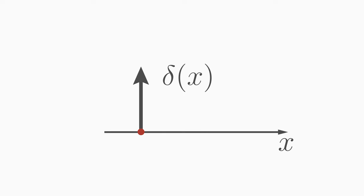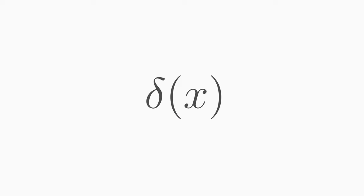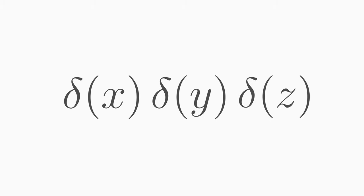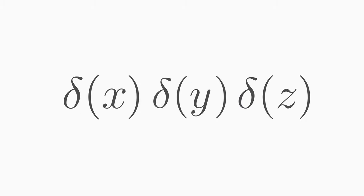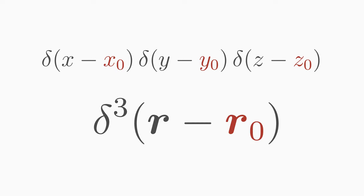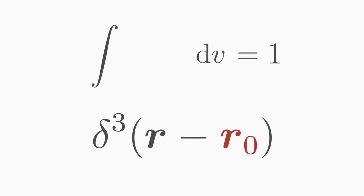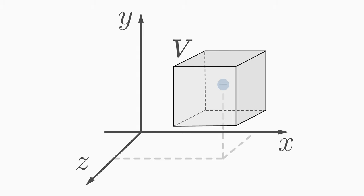So far we have considered only the one-dimensional delta function. Charges or other point objects are usually located in three-dimensional space. If a unit point charge is at the origin, we describe its charge density with the product of three delta functions: δ(x) · δ(y) · δ(z). This product is non-zero only if the charge is at position (0, 0, 0). If we move the charge to position (x₀, y₀, z₀), we adjust the arguments as in the one-dimensional case. To avoid writing three deltas, we combine them into one δ³ with a superscript 3, using position vector r and displacement vector r₀ in the argument. The line integral with one delta function becomes a volume integral with three delta functions, yielding one when integrating over a volume v that includes the position of the three-dimensional delta function.